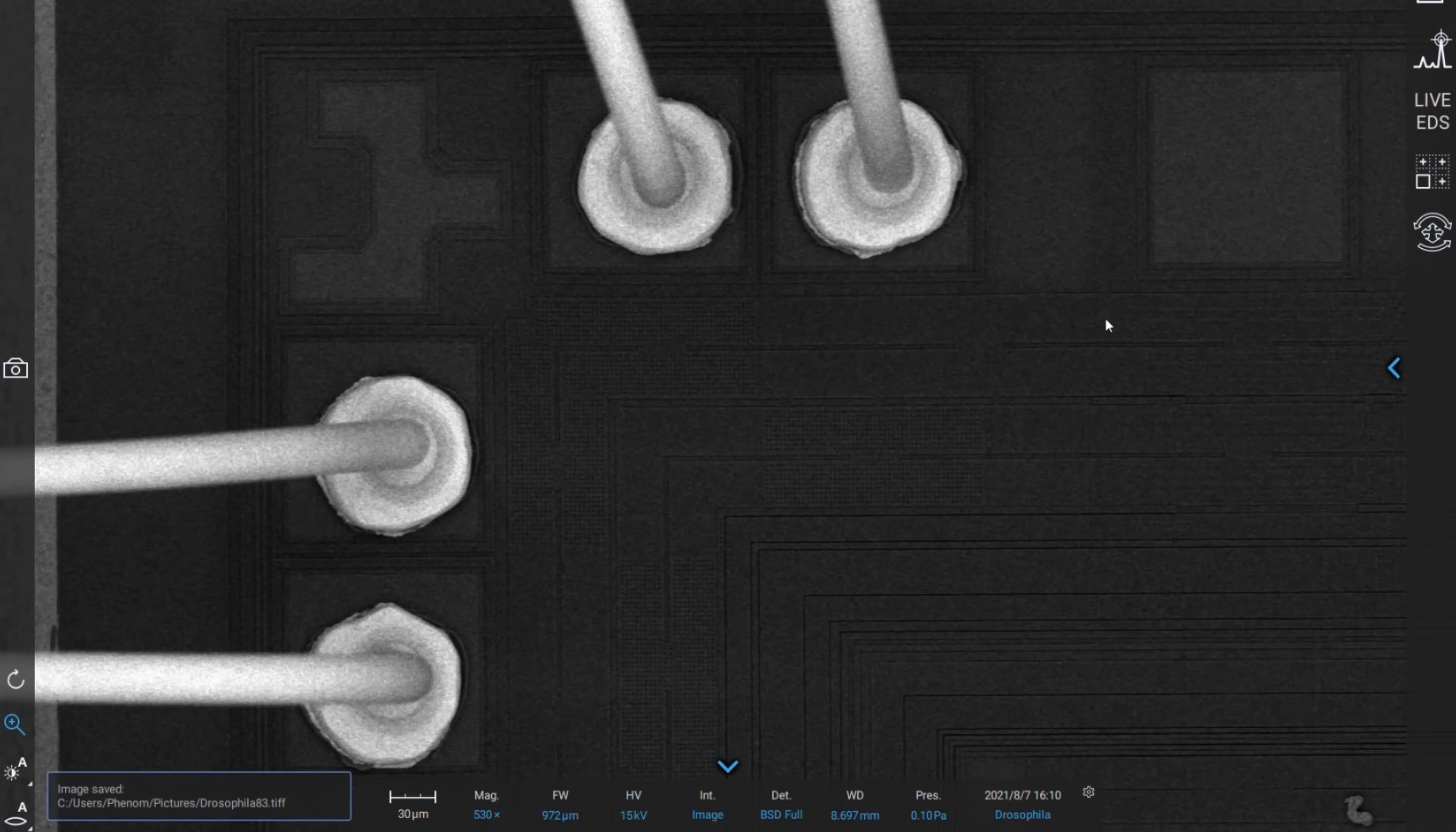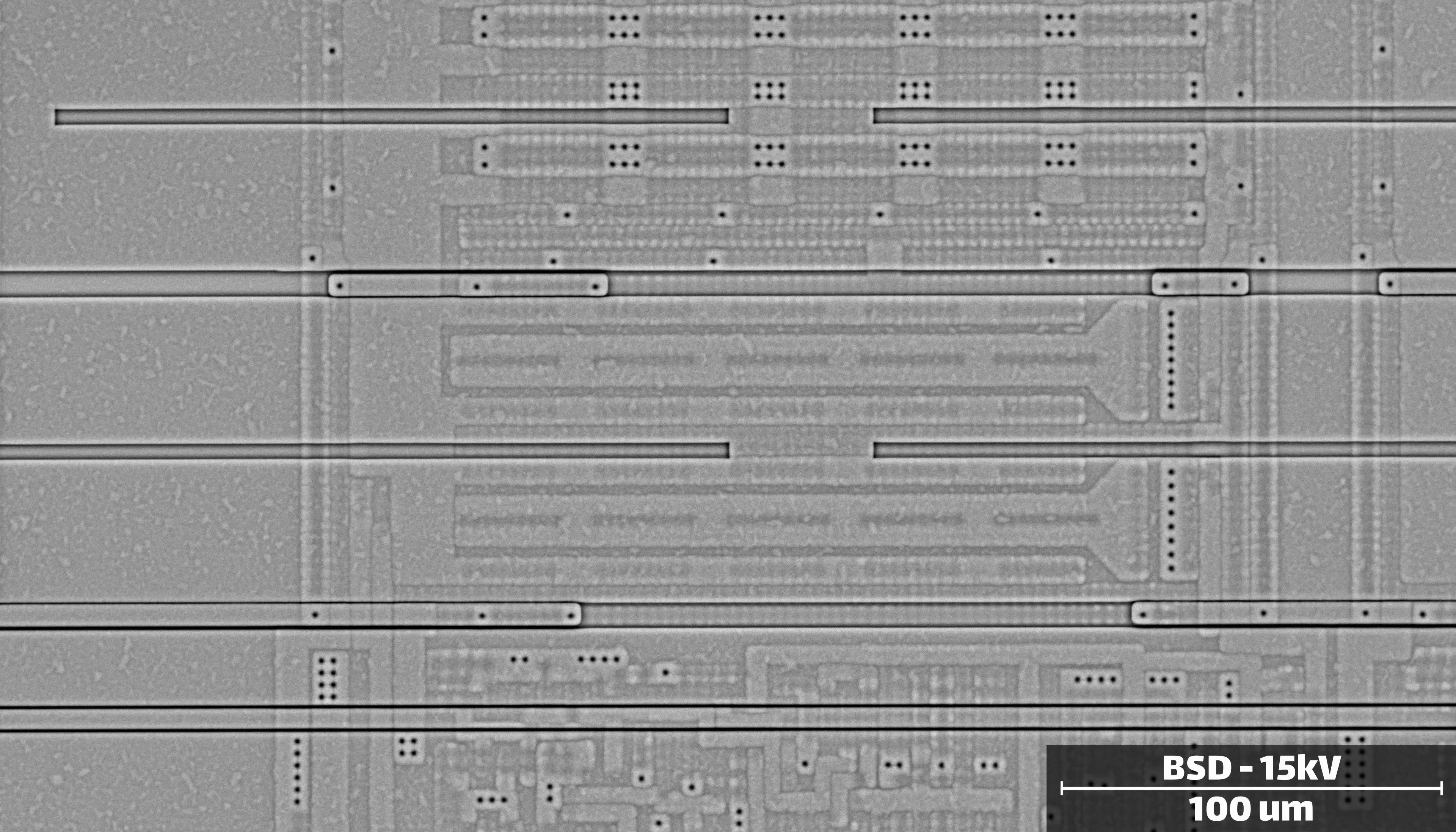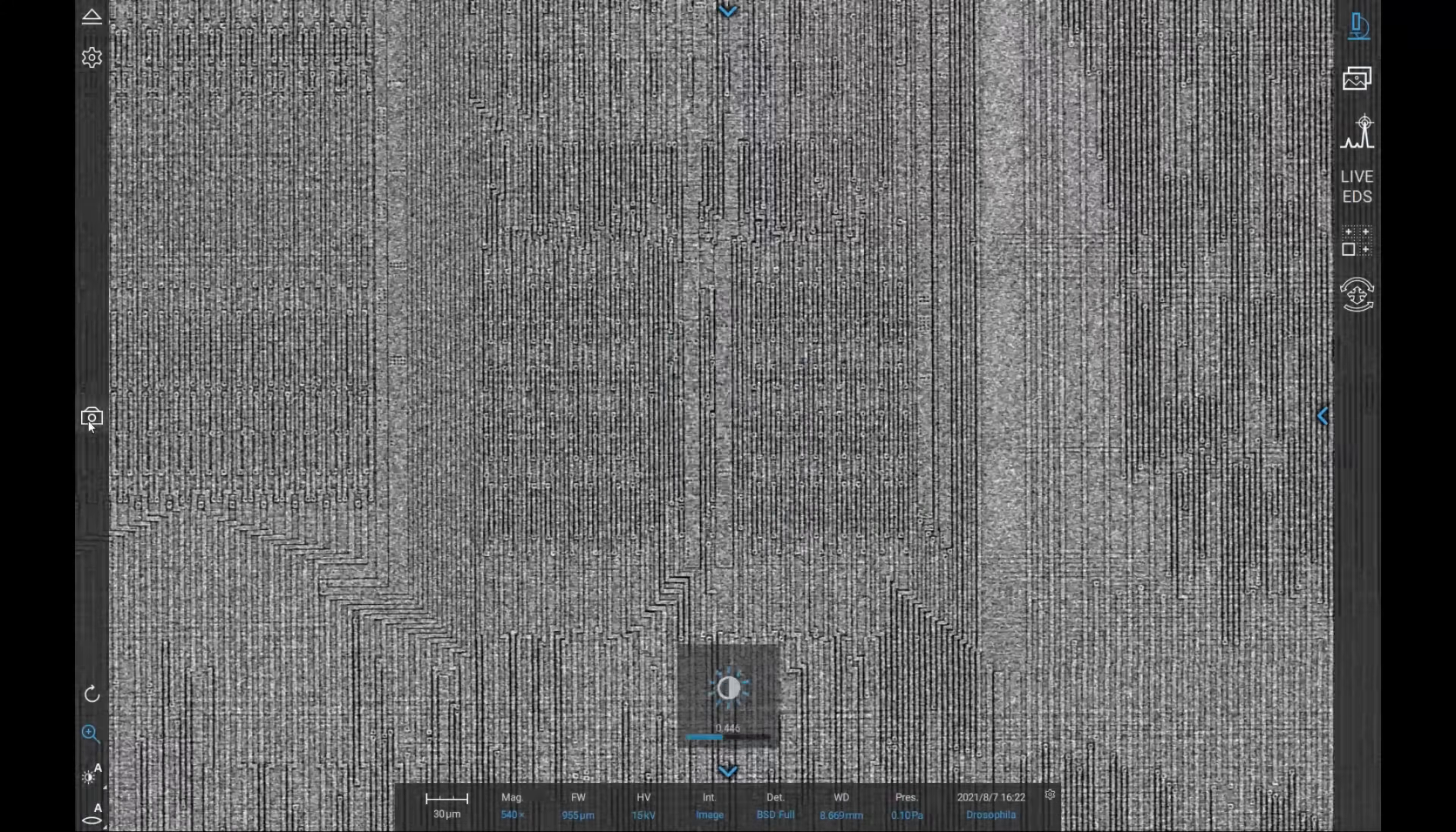We can switch to a different detector on the scanning electron microscope that allows us to peer beneath the surface a little better. This allows us to see and map the underlying layers in better detail. The 486 only has a handful of layers, but modern CPUs might have dozens stacked on top of each other.